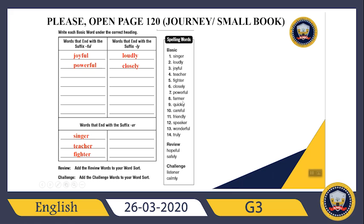Farmer — what about farmer? I need to write farmer in the third category. Quickly — I need to write quickly in the second category, which is words that end with the suffix -ly. What about careful? I need to write careful in the first category, which is words that end with the suffix -ful.